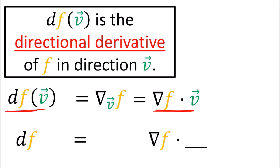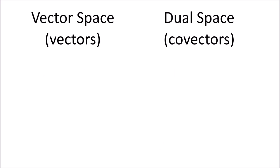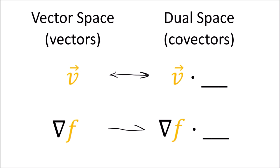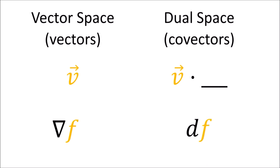In a sense, this means that df is equal to del f dotted with something — these are both functions that take a vector input and produce a scalar, and when we plug in the same vector into each we get the same answer: the directional derivative. So df and del f dot something are actually the same function. Just as we can pair up a vector v with a partner covector v dot something, we can also partner the vector field del f with the partner covector field del f dot something, and this is equal to the covector field df. So df is the dual covector field of the vector field del f, which in this video I call the gradient of f.